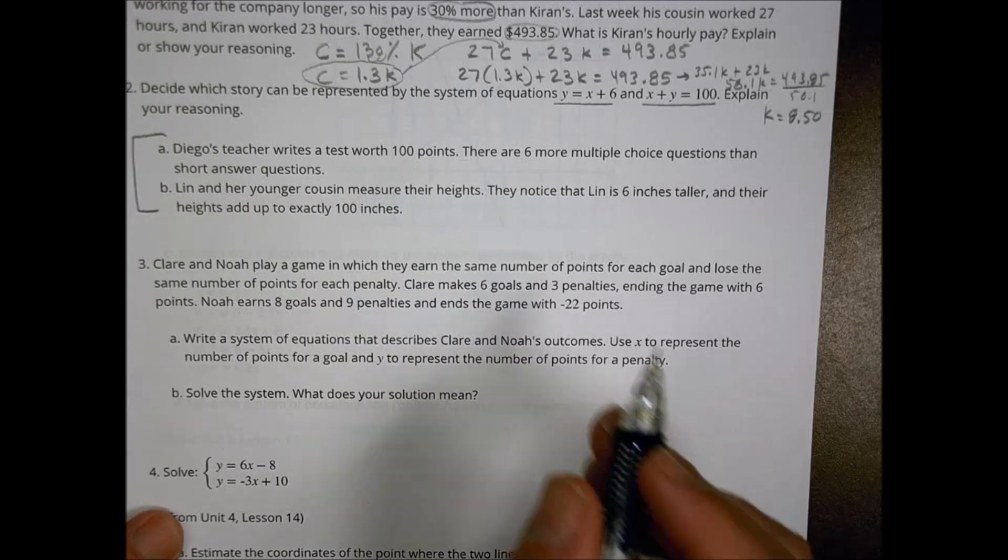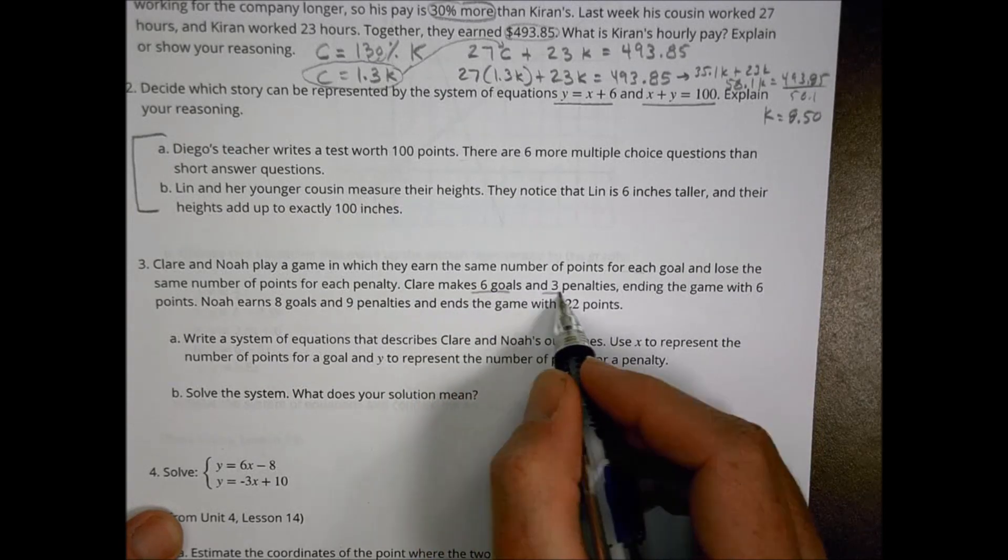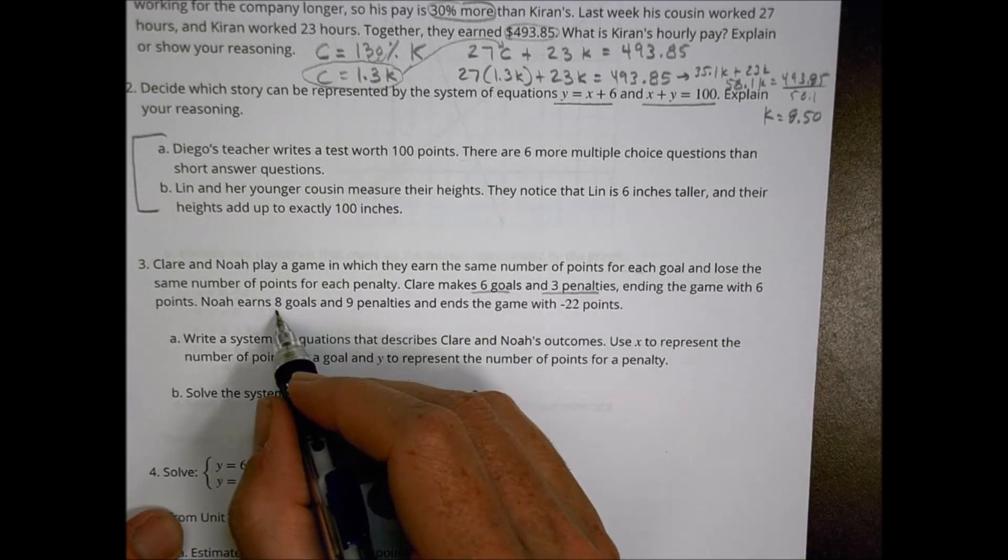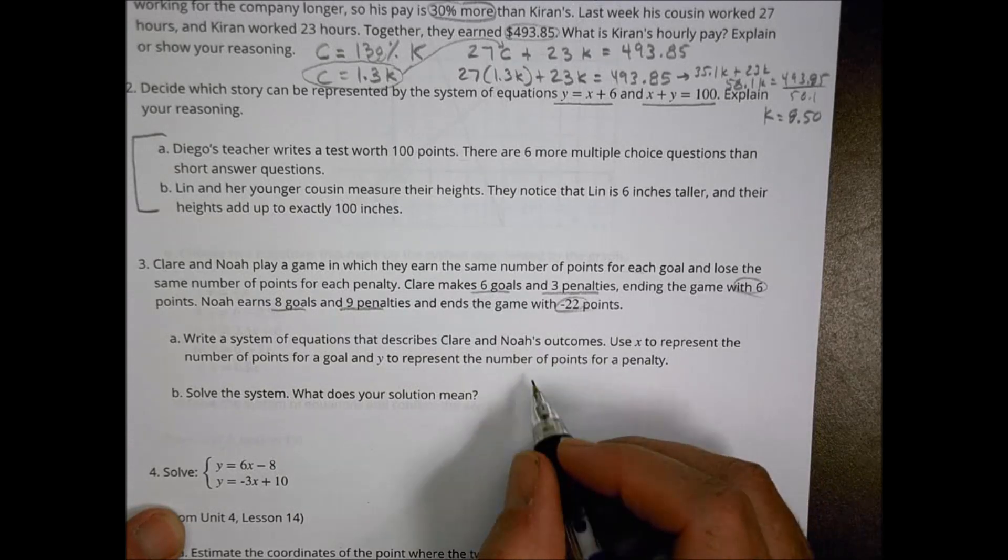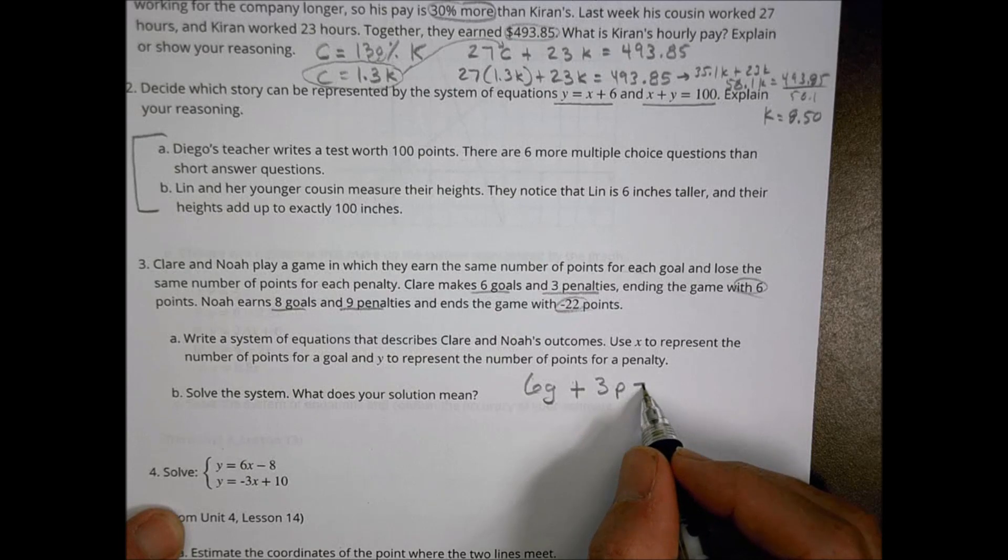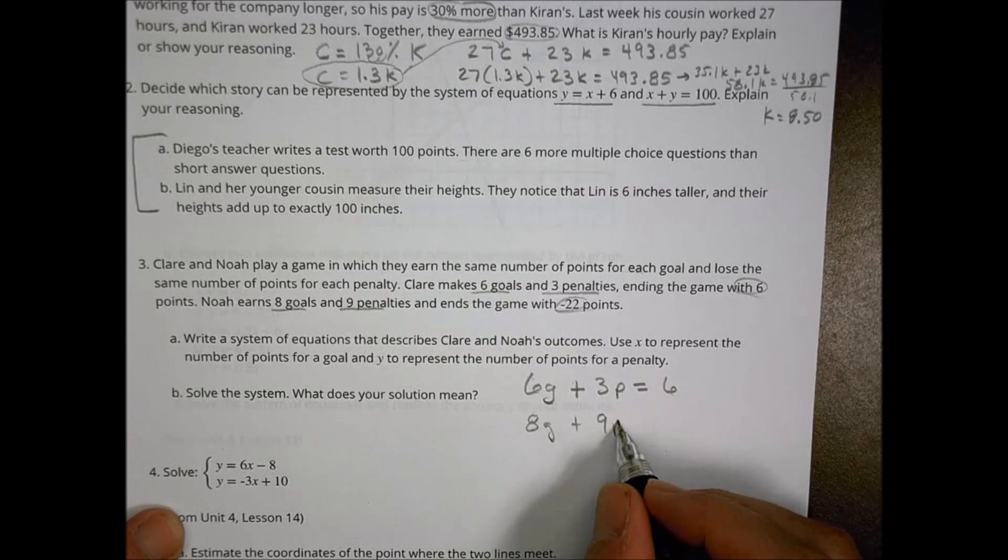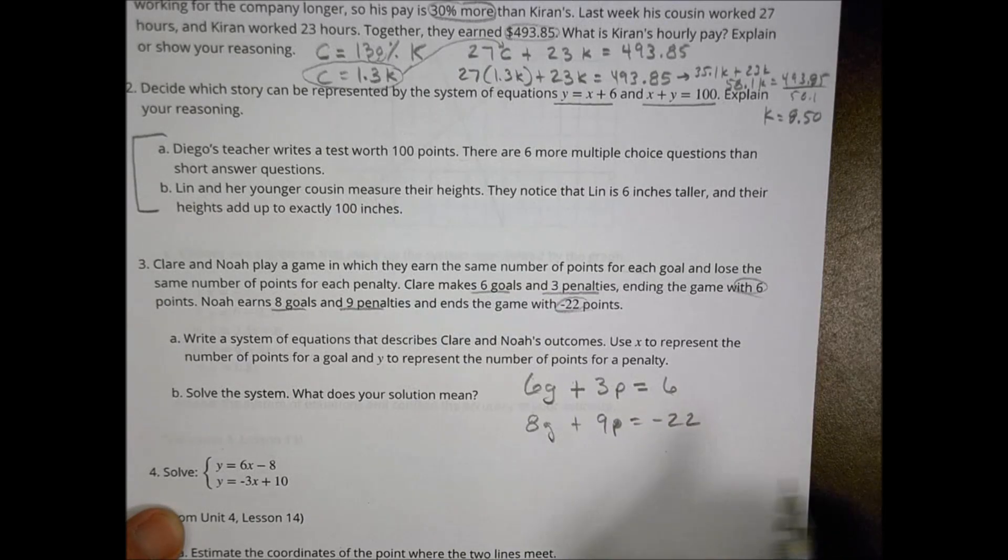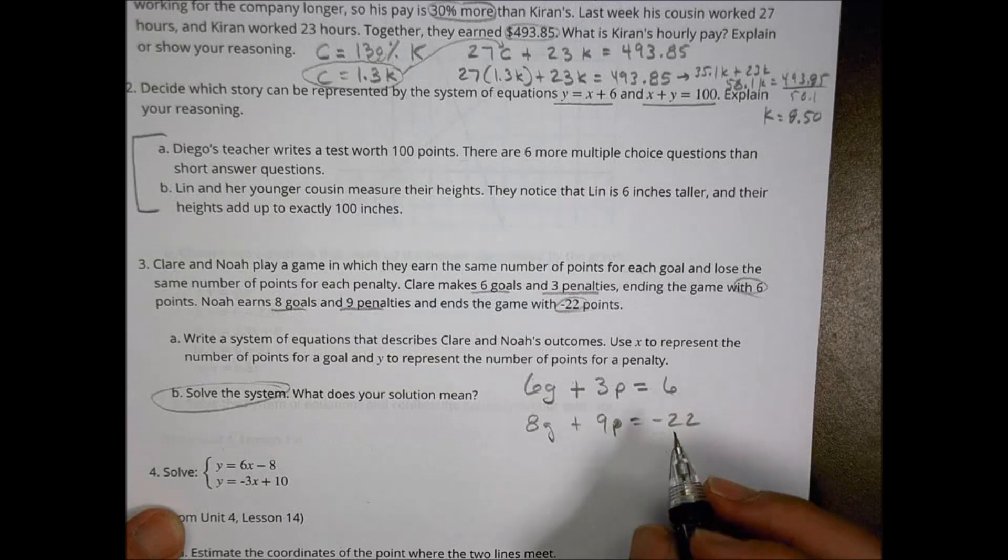Let's take a look at number three. Claire and Noah play a game in which they earn the same number of points for each goal and lose the same number for each penalty. Claire makes six goals and three penalties, ending the game with six points. Noah has eight goals, nine penalties, and negative 22 points. Write a system of equations that describes their outcomes. So for Claire, Claire had six goals plus three penalties equal a total of six points. And Noah had eight goals plus nine penalties for a total of negative 22 points.